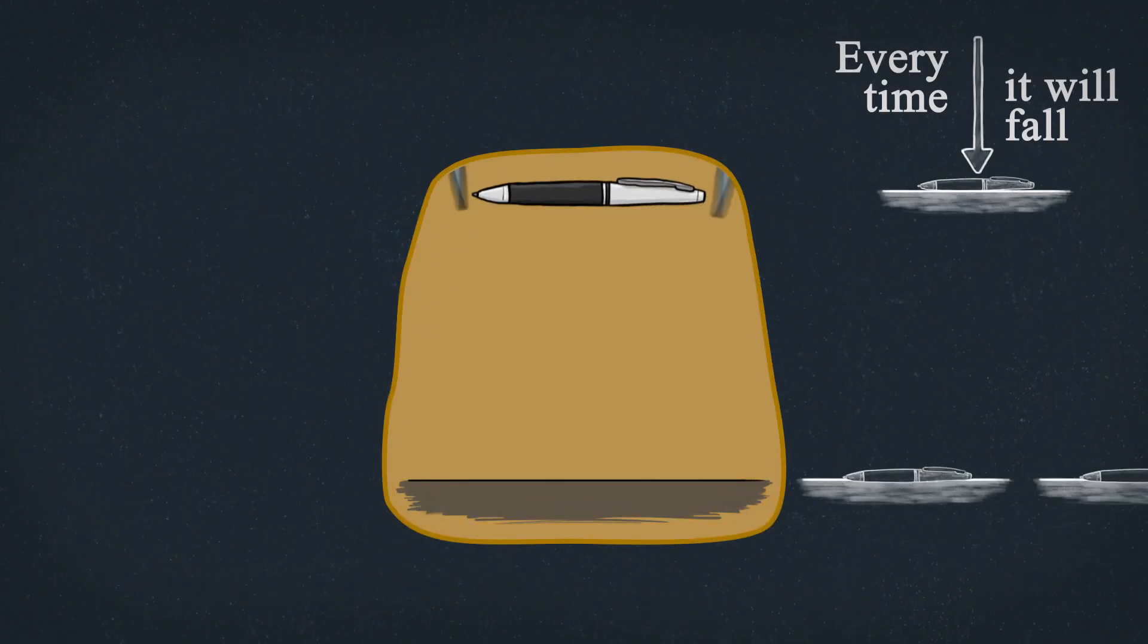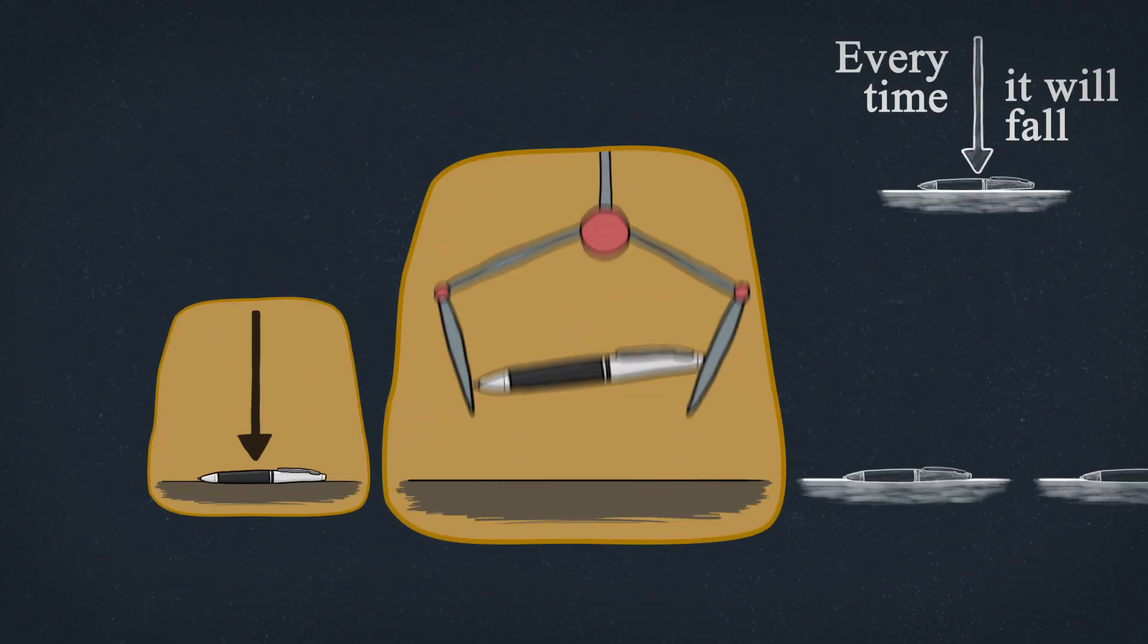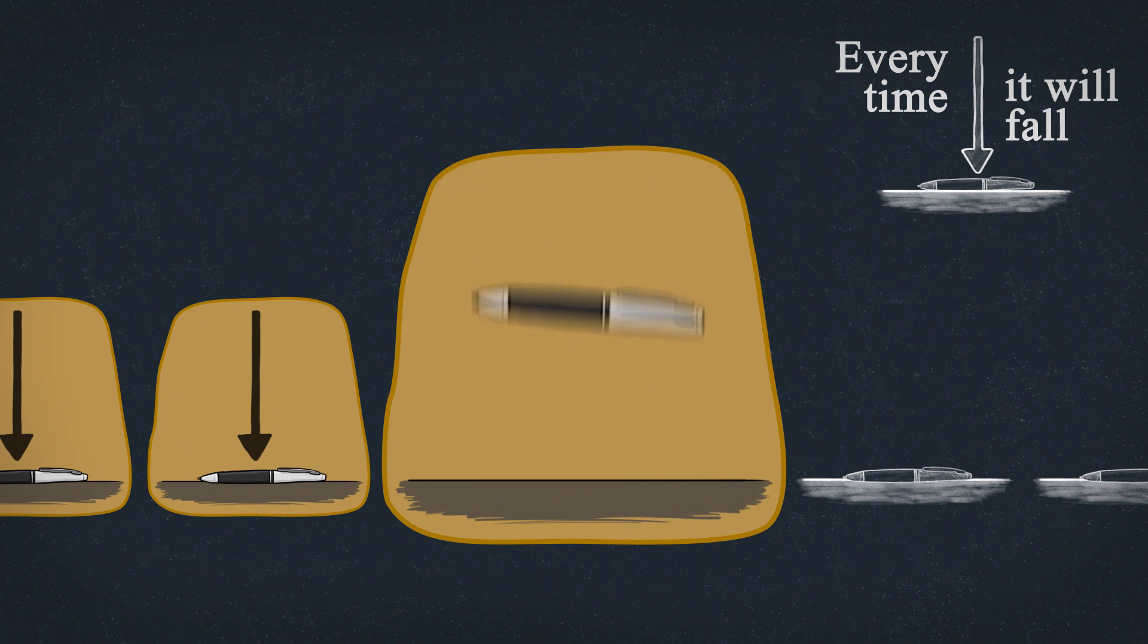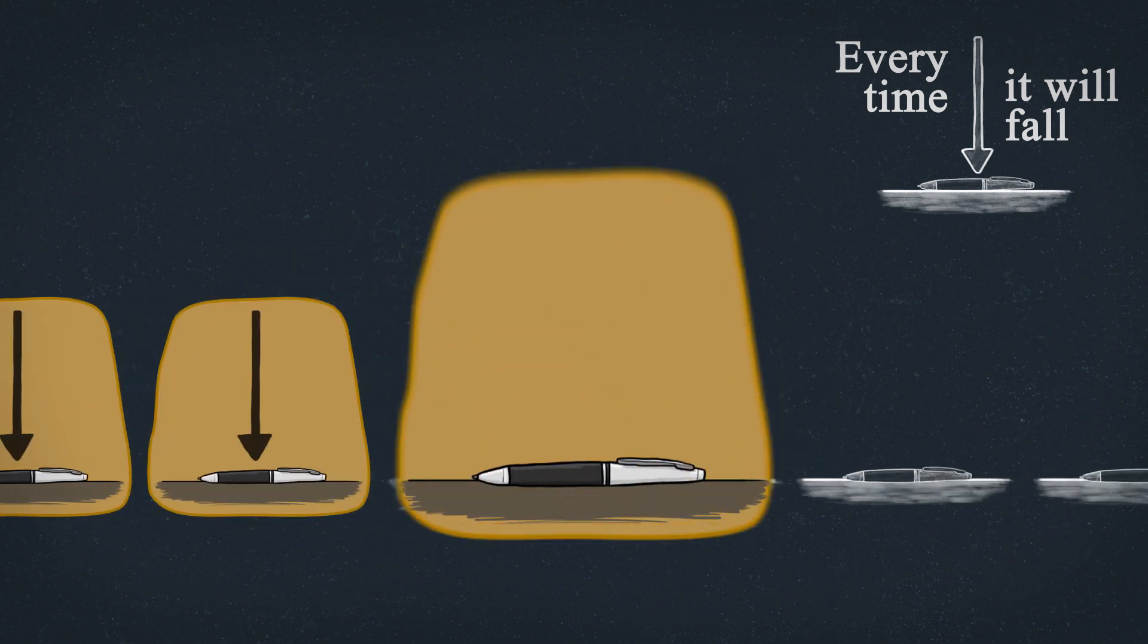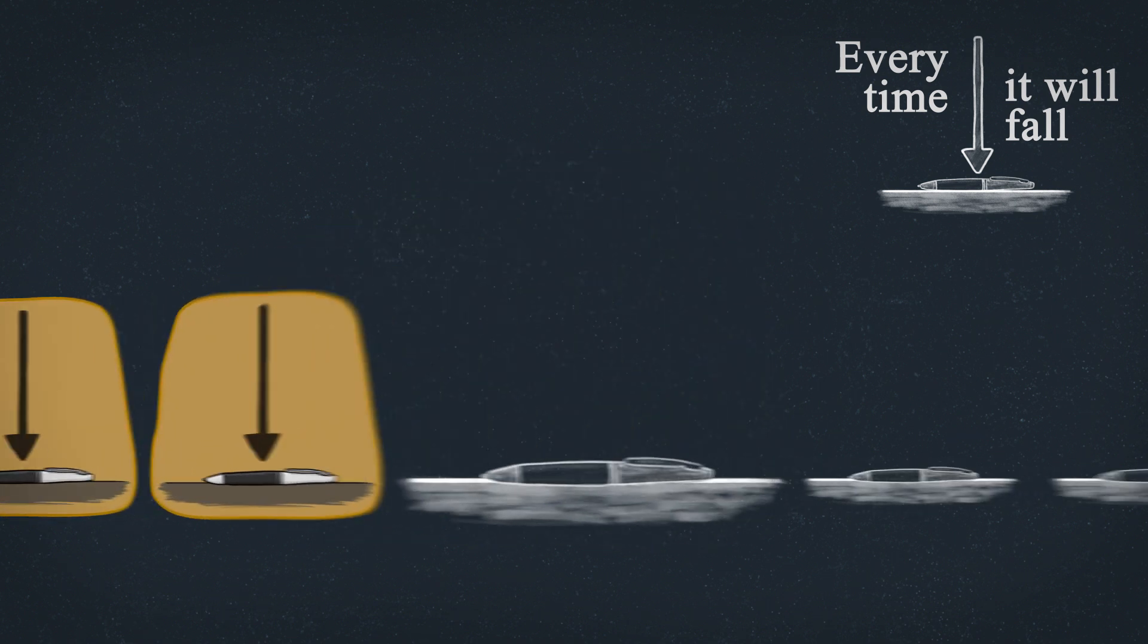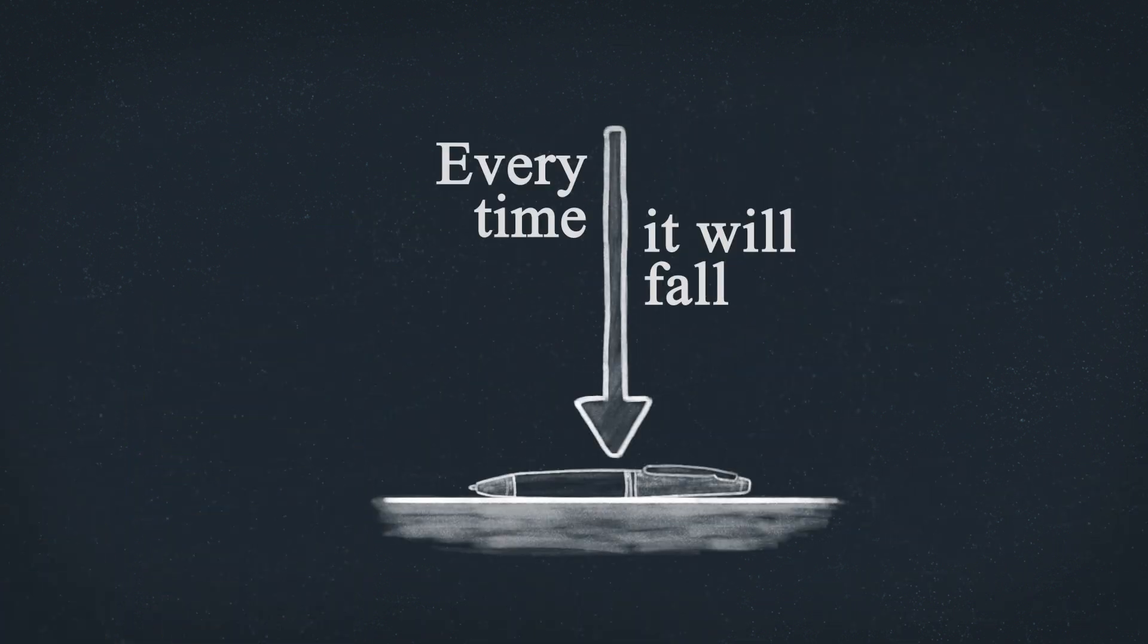That is, there's nothing we can see that will let us know that this idea is true. Even if every time we've ever seen the pen dropped, it fell, the hypothesis wasn't every time we've seen it. The hypothesis was every time. Every time will always include the next time in the future where we can't observe it. So this specific idea will never be able to be an observation in our mind.